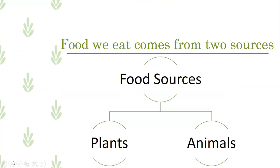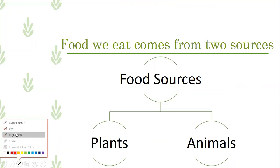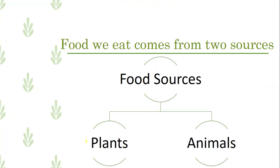The food we eat comes from two sources. We have two food sources: the first source is plants, and the second source is animals. We will take some examples of food that we can get from plants and food that we can get from animals.